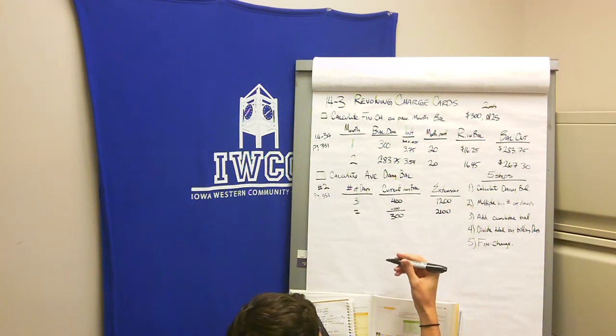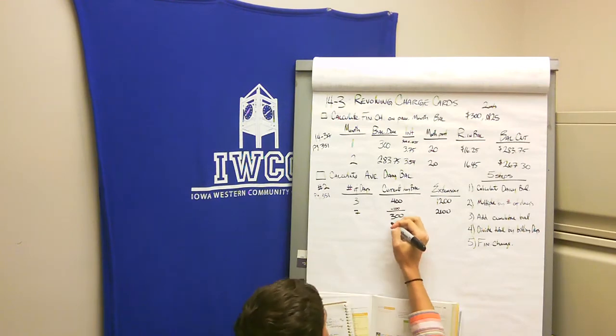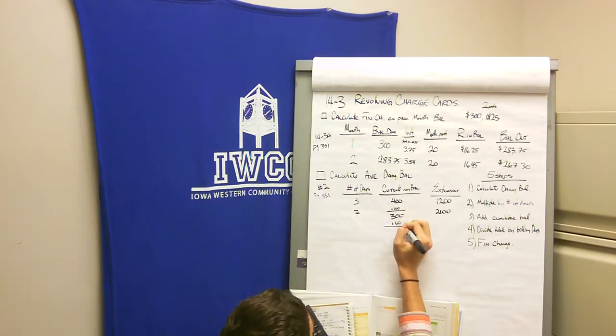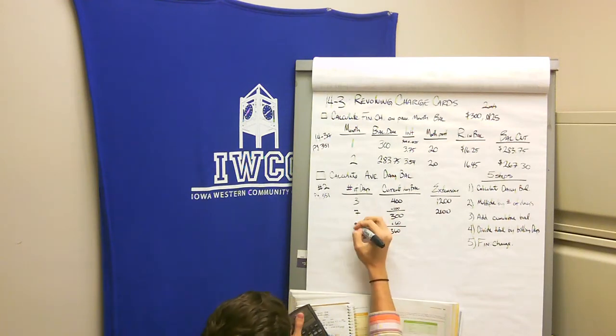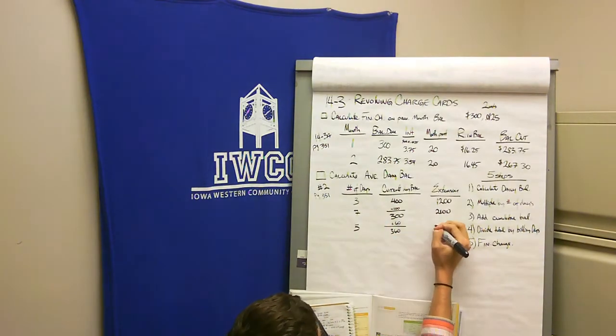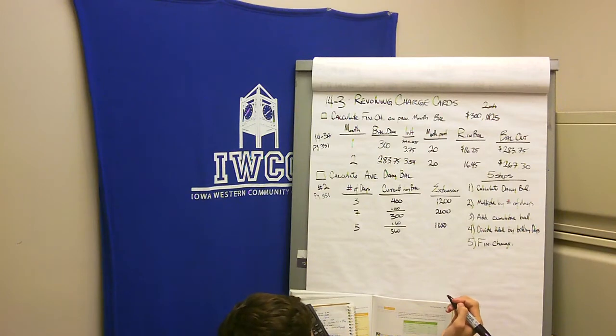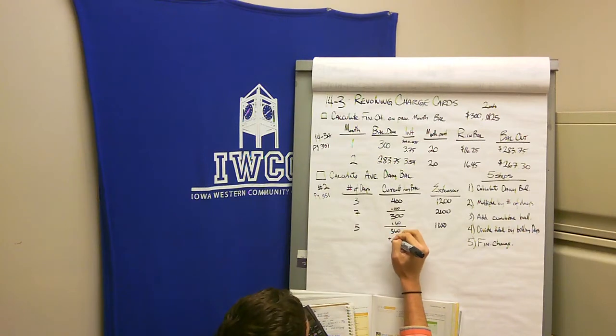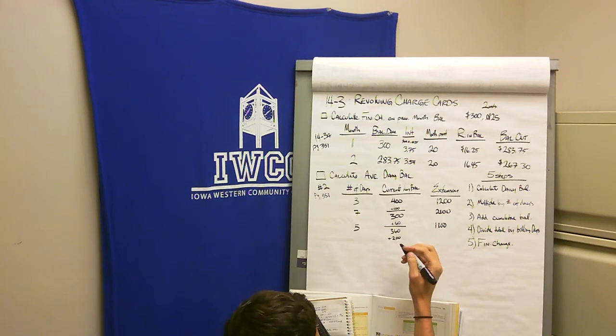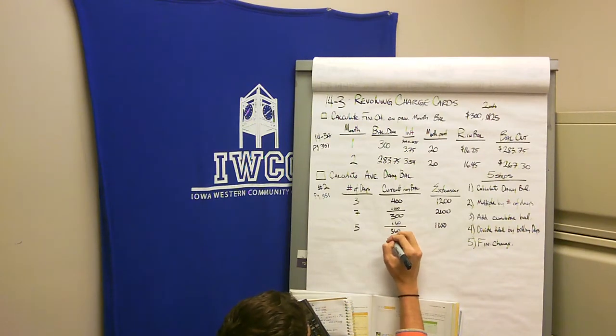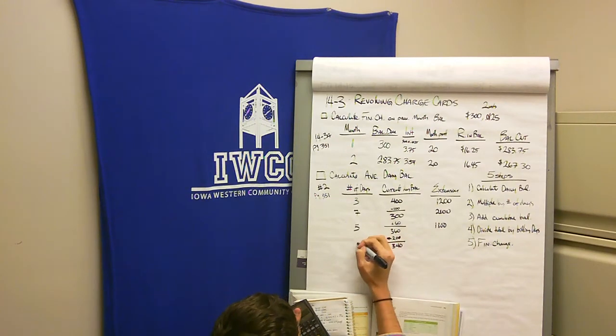Then it says on the 31st I bought something from Staples for $60. So my new balance is $360, and it stays that way for five days. 5 times $360 is $1,800. Then it says I paid $20, and that was for five days.